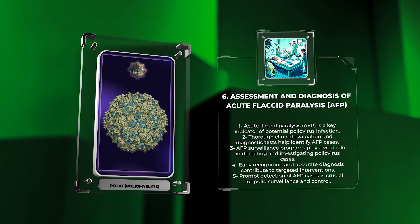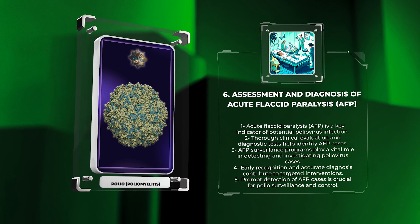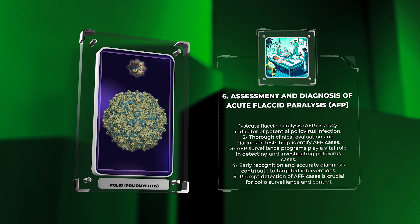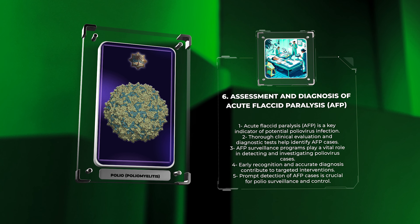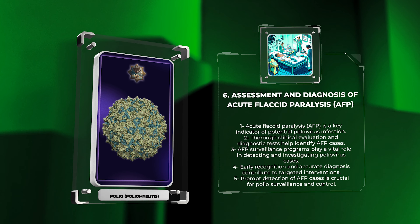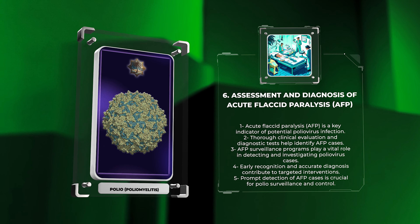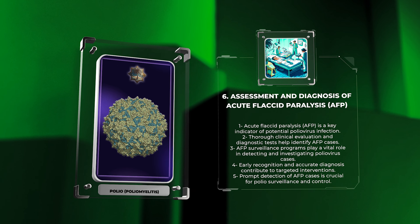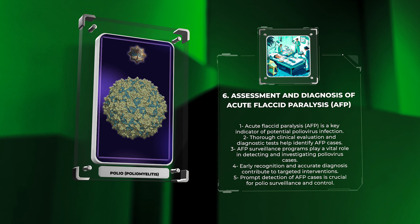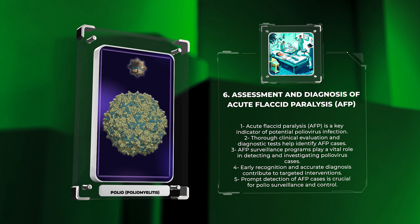Diagnostic tests like electromyography, EMG, nerve conduction studies, and magnetic resonance imaging, MRI, can help confirm the diagnosis and rule out other causes of paralysis. AFP surveillance programs play a vital role in detecting and investigating suspected poliovirus cases, with close collaboration between healthcare facilities, laboratories, and surveillance systems for timely specimen collection, testing, and reporting. Early recognition and accurate diagnosis by healthcare professionals contribute to targeted interventions, surveillance efforts, and ultimately the eradication of poliovirus.